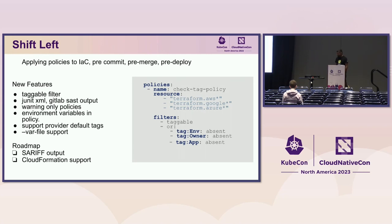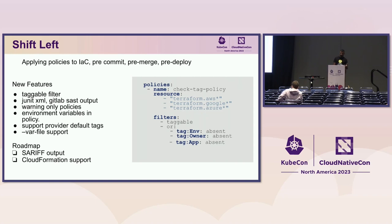I was at a FinOps meetup yesterday talking to someone who'd been using Custodian for years, and they wanted to apply policies before resources get deployed. We've actually had that shift-left capability for about a year. It has its own CLI front end because it's really targeted at being applied on a developer workstation or in your CI/CD. In the developer workstation context, we have developer-friendly output, directly tagging the source lines that are non-compliant to a policy. In CI, we do direct annotation of pull requests so code reviewers can see exactly which resources are flagging against which policy.